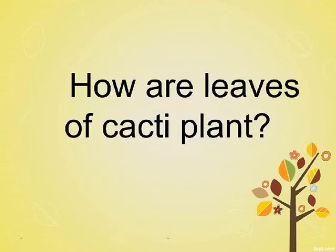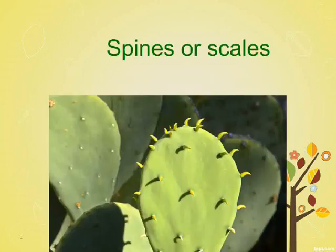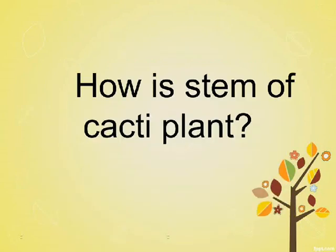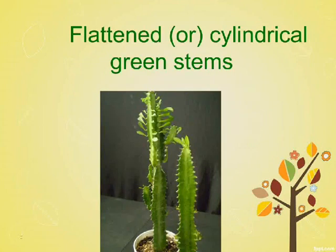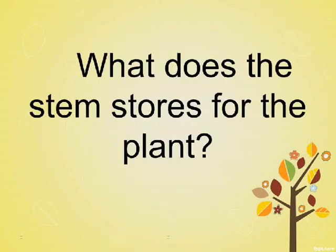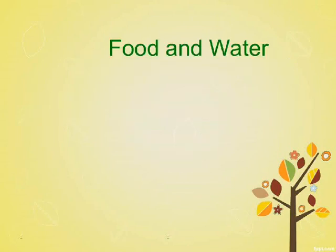How are the leaves of a cacti plant? They are spines or scales. How is the stem of a cacti plant? It has flattened or cylindrical green stems. The stem stores food and water for the plant.